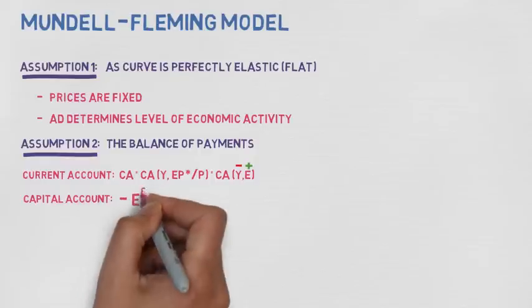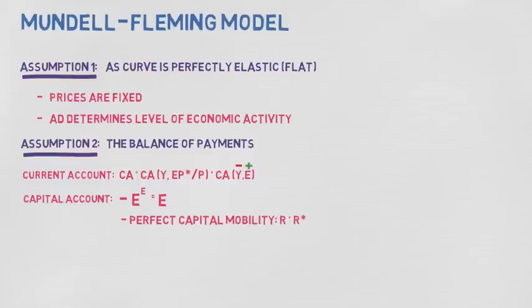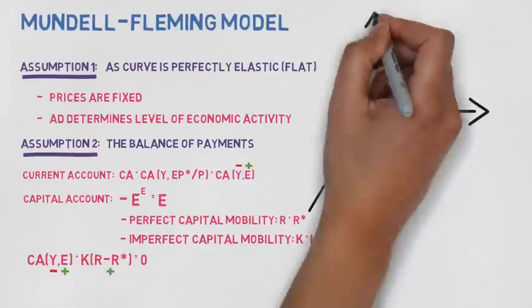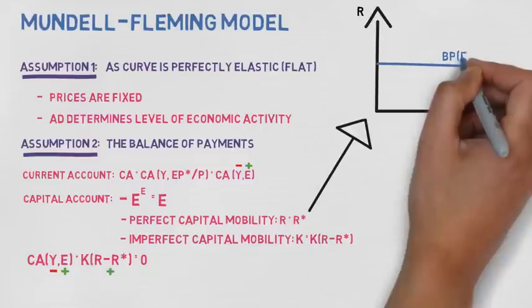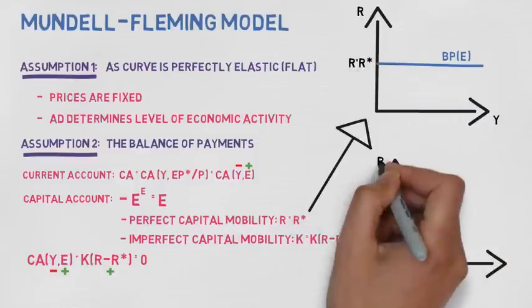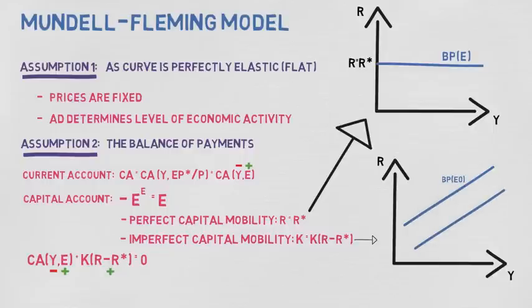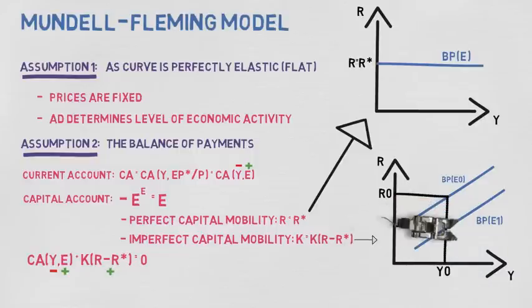Looking at the capital account, we first assume that exchange rate expectations are static. Regarding capital mobility: if there is perfect capital mobility, the UIRP condition always holds, and given static expectations, the domestic interest rate R equals the foreign interest rate R-star. If there is imperfect capital mobility, flows of capital depend on interest rate differentials between countries. Combining these, we create a balance of payments relation where capital flows finance the current account deficit or absorb the surplus. With perfect capital mobility the BP curve is flat; with imperfect capital mobility it is no longer flat. If there is a depreciation from E0 to E1, the BP curve shifts down from BBE0 to BBE1. Note that E falls in the case of an appreciation and increases in the case of a depreciation.